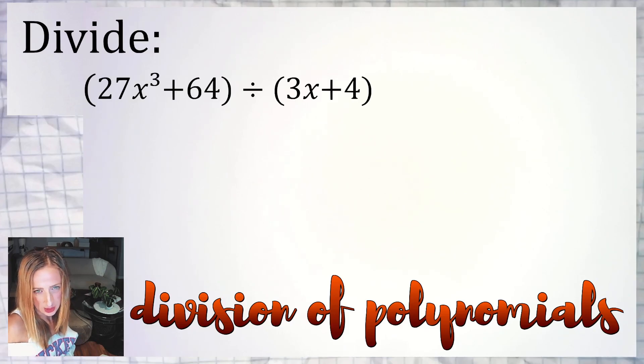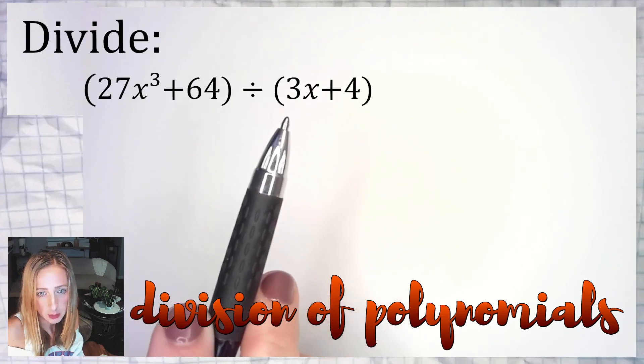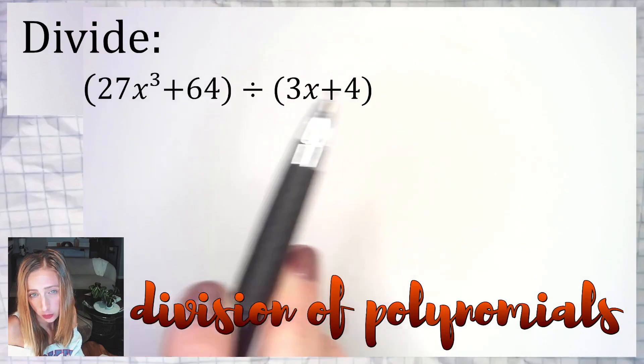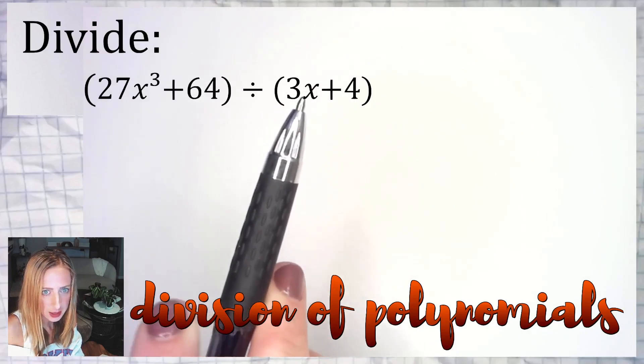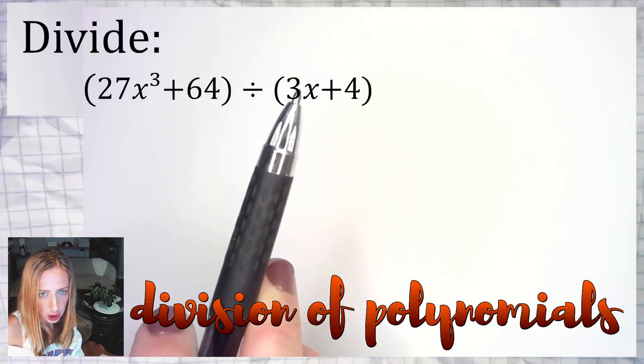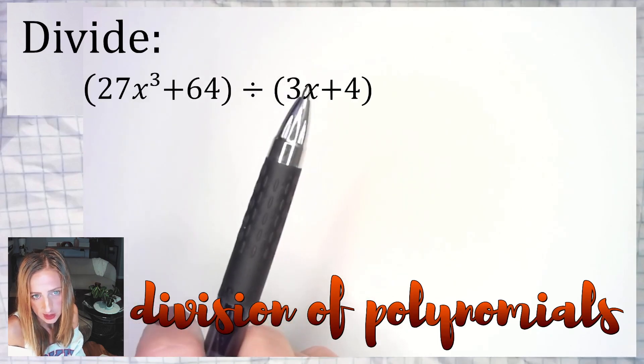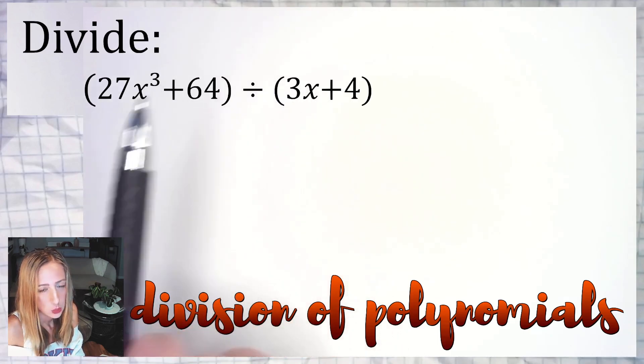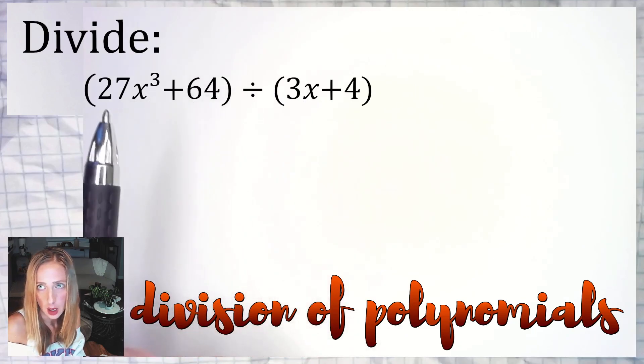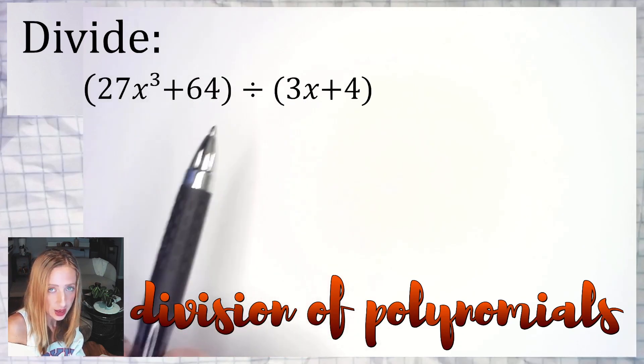The go-to method I would use on an example like this one where we're dividing by 3x + 4, a linear binomial that has a leading coefficient that is not one, eliminates the option to use synthetic division.